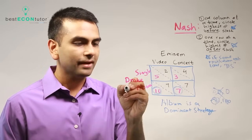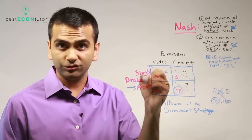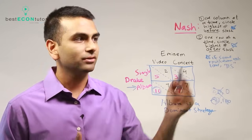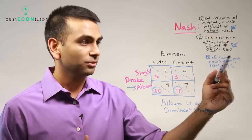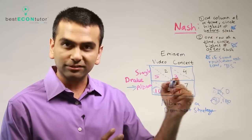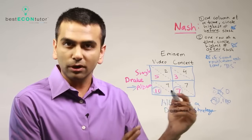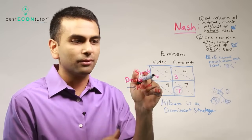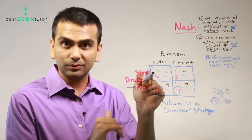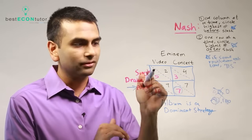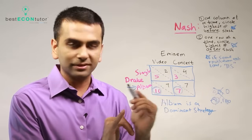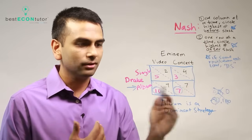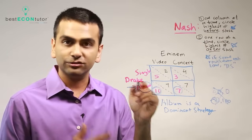Notice that Drake basically always wants to do the album. Regardless of what Eminem's doing, in both cases the album was better than the single. So we're going to say that doing the album is a dominant strategy for Drake. If any one of your two strategies is always better regardless of what the other player does, that's a dominant strategy. When you're doing that circling one column at a time and you're always picking the same row, that row is a dominant strategy.